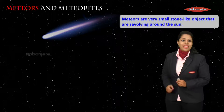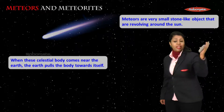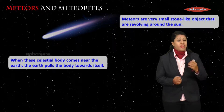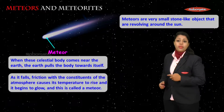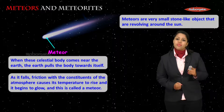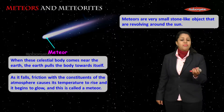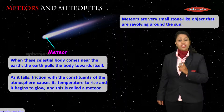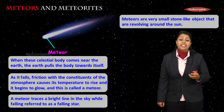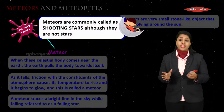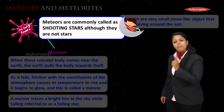Meteors are very small stone-like objects revolving around the Sun. When these celestial bodies come near the Earth, the Earth pulls them towards itself and they enter Earth's atmosphere. Friction with the constituents of the atmosphere causes their temperature to rise, and because of that they begin to glow. A meteor traces a bright line in the sky while falling, which is referred to as a falling star or shooting star.